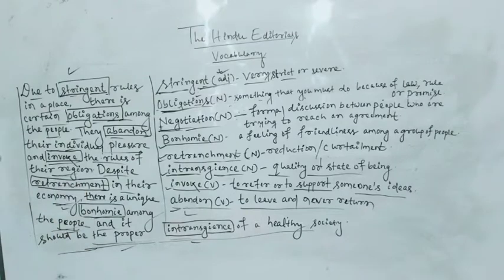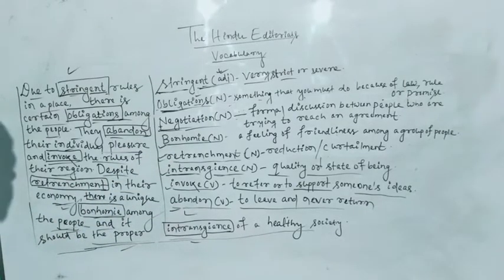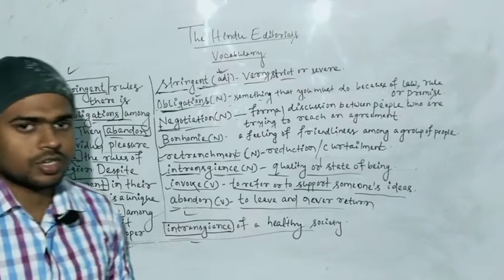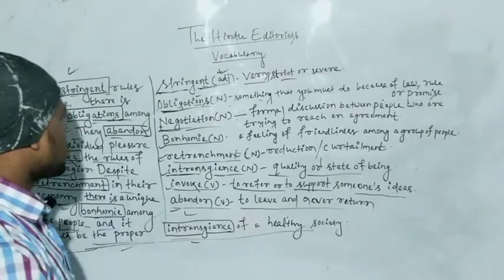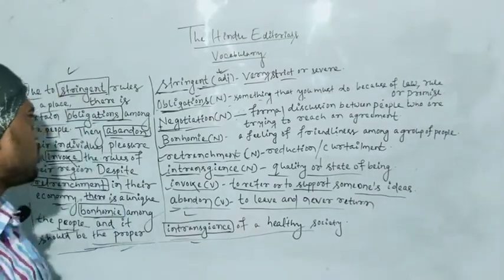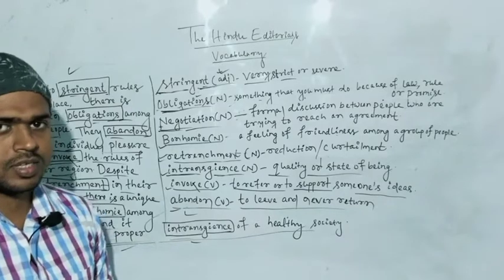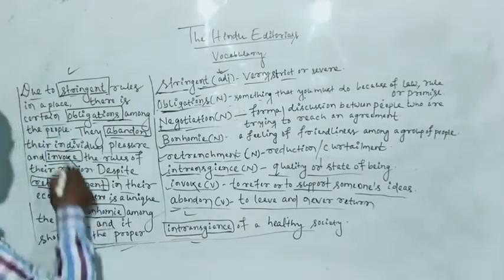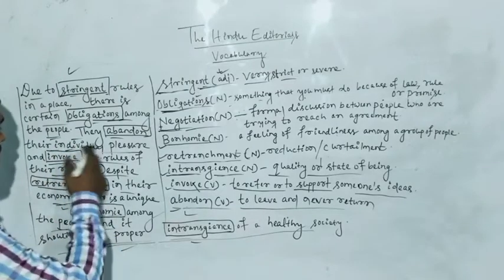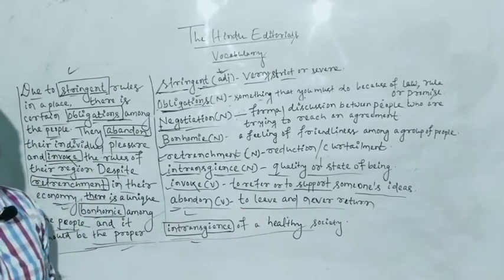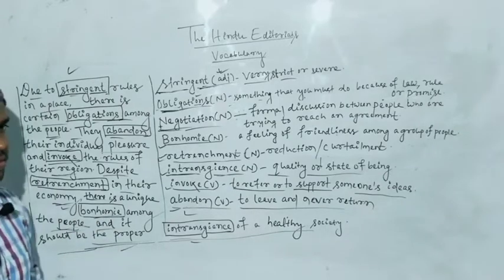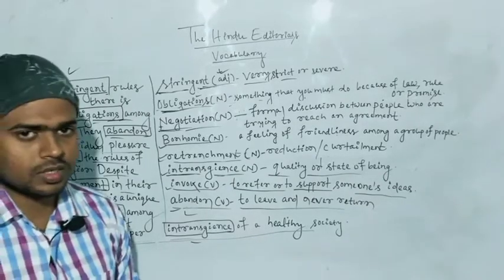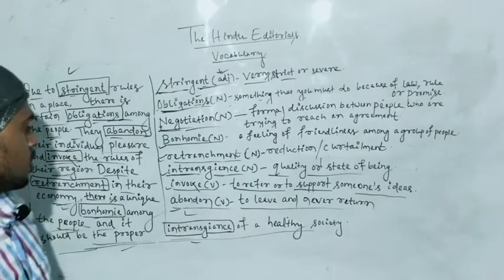So I will write a story by the help of these 8 words. Let's summarize it. In this story, there are strict rules in a place where people are completely aware of the rules. After that, there is individual pleasure which they abandon to support the rules of the region. They support the rules.